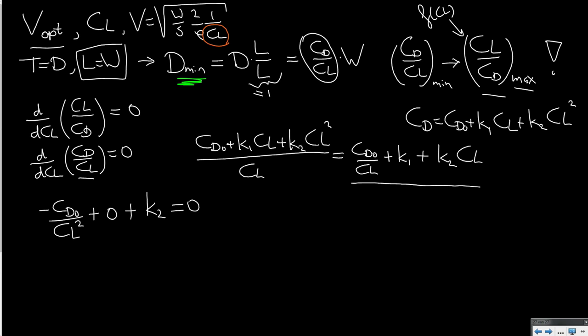So let us write out what CD over CL in fact is. Now, CD is CD 0 plus K1 CL plus K2 CL squared. So if I take the derivative with respect to CL of this function, I will obtain minus CD 0 divided by CL to the power 2 plus the derivative of K1 to CL, which is 0 plus the derivative of K2 times CL, which is K2, and this should be equal to 0. Now, that is actually quite a simple relation and you can find straight away from this that the solution for CL would be the square root of CD 0 divided by K2 in order to fly at the condition for minimum drag.